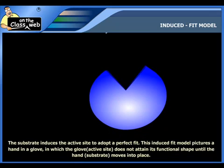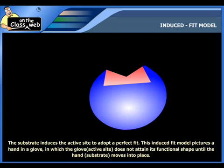In the induced fit model, the substrate induces the active site of the enzyme to adopt a perfect fit. For a clear understanding of the induced fit model, you can think of a hand in a glove. Consider the glove to be the active site.